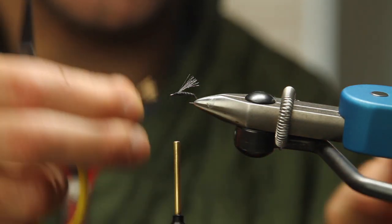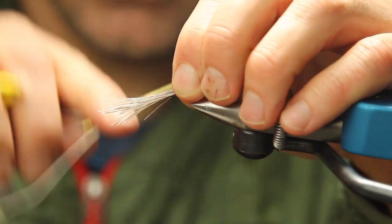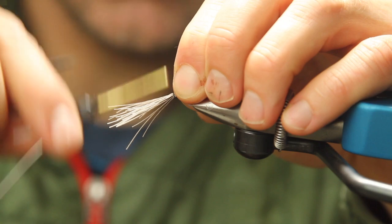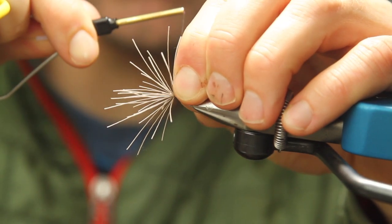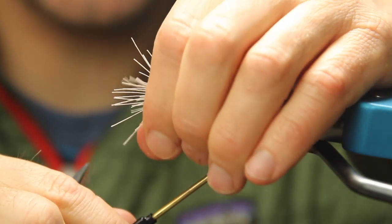Now we're just going to lay this right on top. Slightly longer than our underwing. We're going to come around once. Twice. And on our third we're going to pull up. Make that flare. A couple more wraps. Get it locked down there. A few wraps in front.